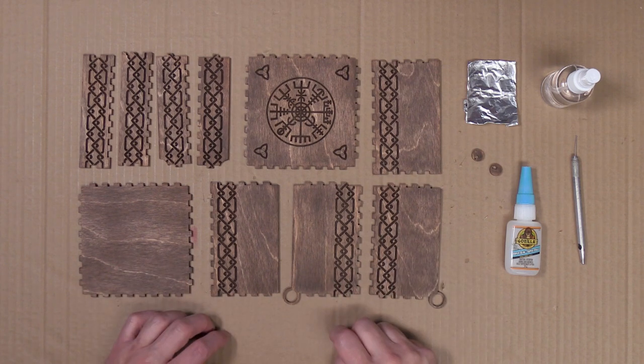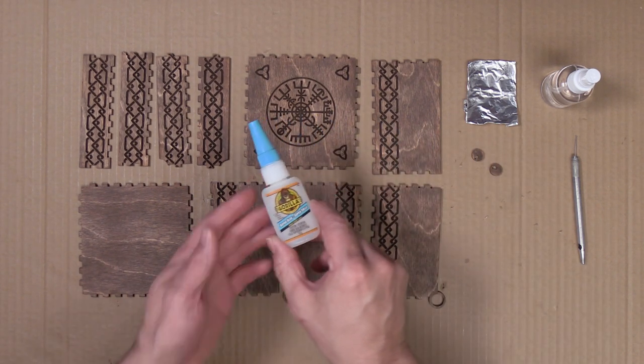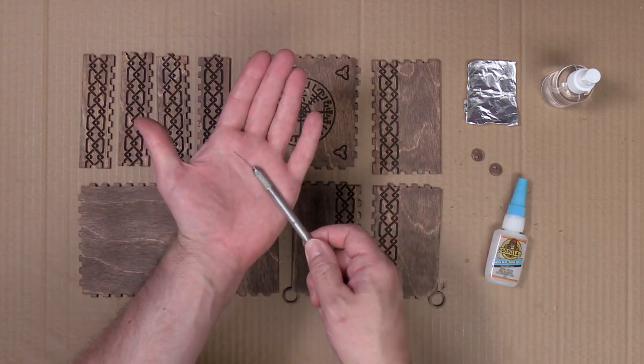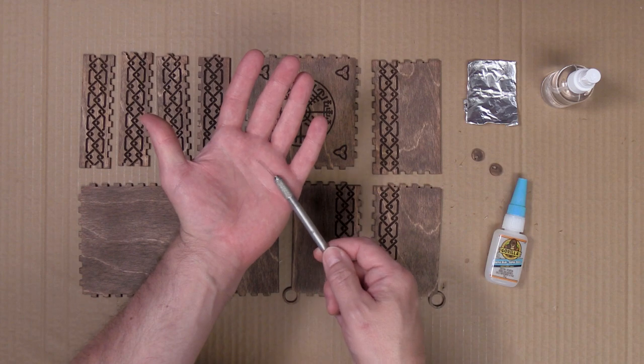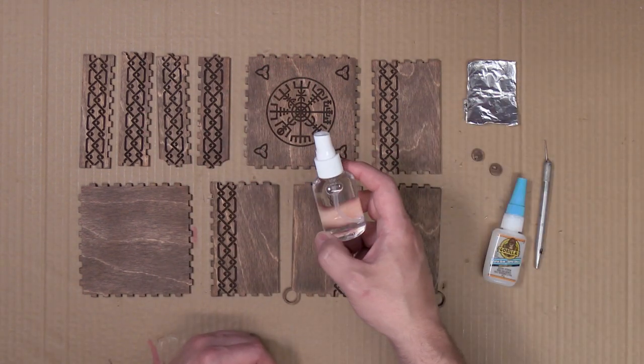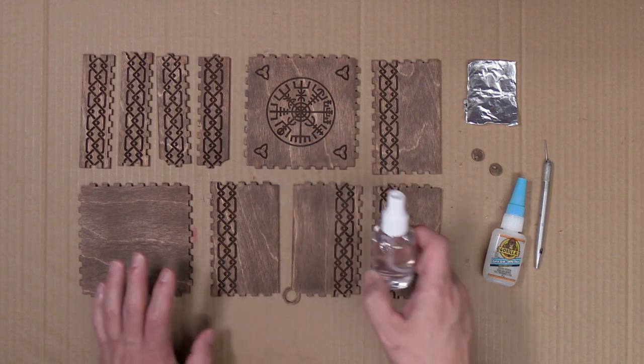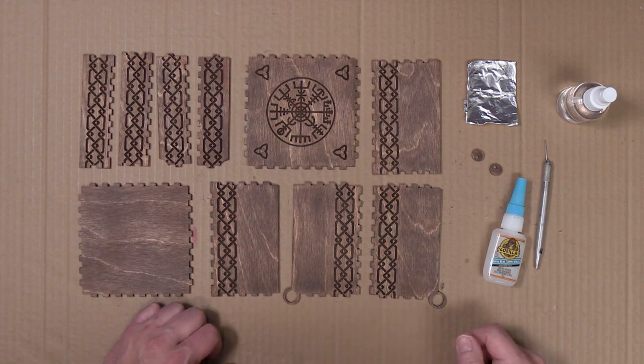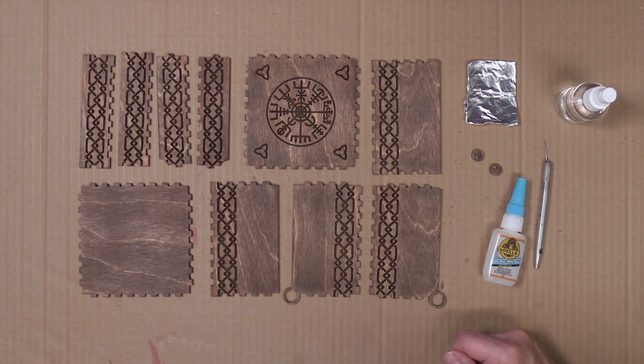Now that the second application of stain is dry, it's time to go ahead and assemble this box. To assemble my box I'll be using some CA glue. I'll be using a pin that's mounted on the handle of an old Exacto knife to apply the glue to each one of the finger joints. I'll also be spraying on some 70% rubbing alcohol that I have here in this little bottle. The rubbing alcohol will act as an accelerator for the CA glue.